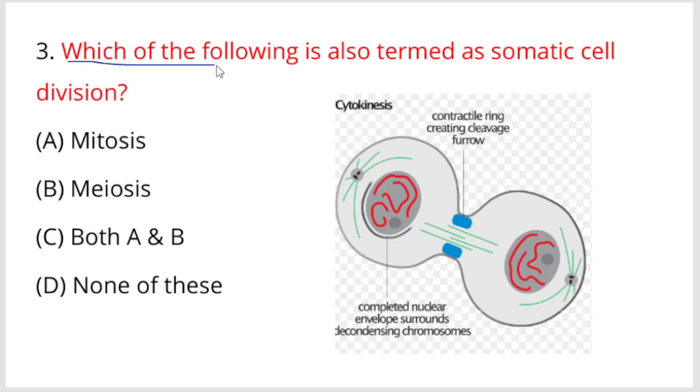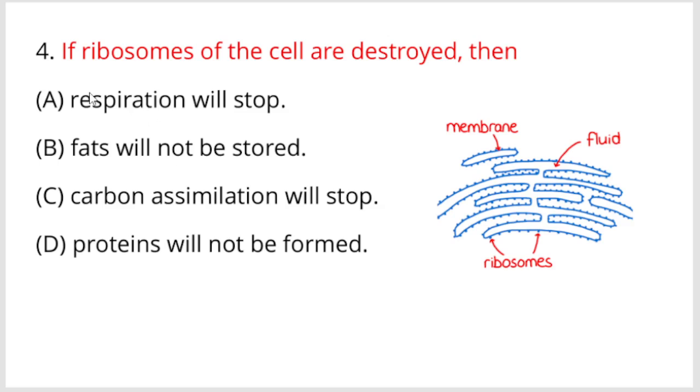Next, which of the following is also termed as somatic cell division? Mitosis is somatic cell division. Option is mitosis, your right answer. Next, if ribosomes of the cell are destroyed, then the protein will not be formed. Option D is your right answer.